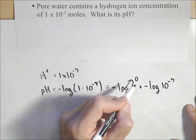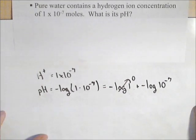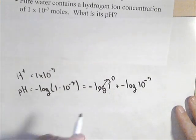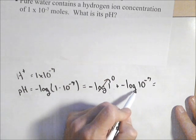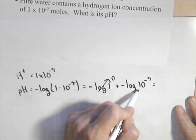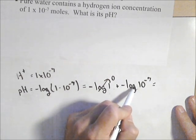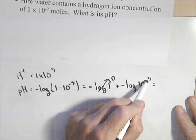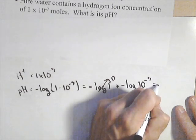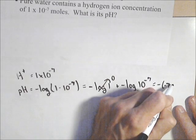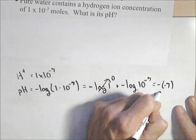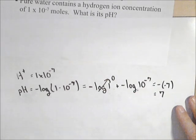Log of 1 is just 0, so that goes away. And now we have -log(10^-7). Well, this is base 10, so log base 10 of 10^-7 is just -7, so we get a negative negative 7, or the water has a pH value of 7.